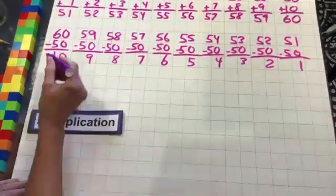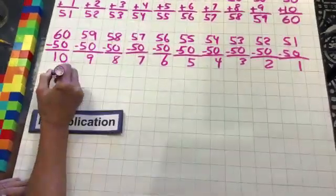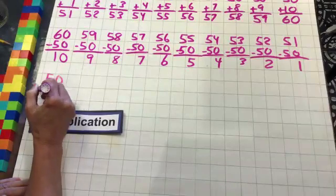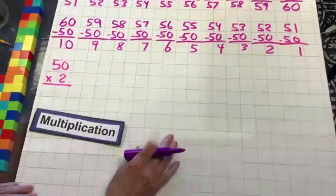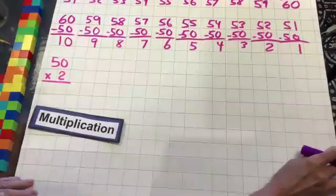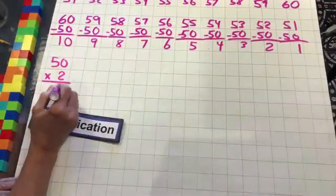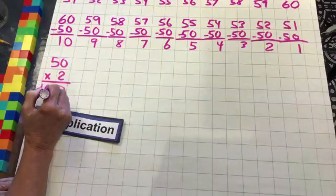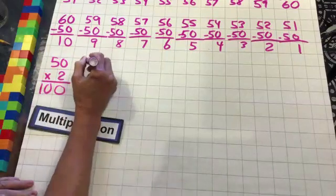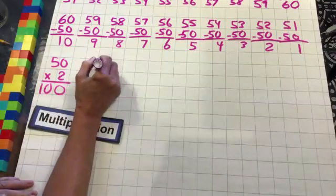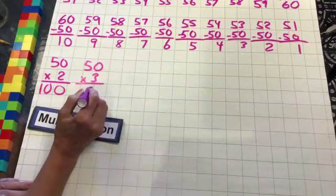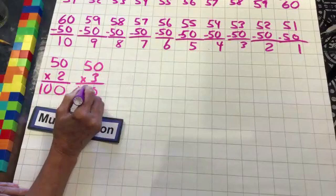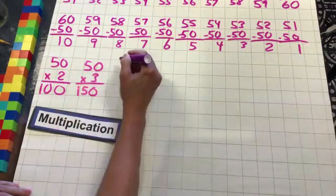Let's move on to multiplication. So we have 50 times two. Let's go through this, make sure we're all on the same page. Two times zero is zero, two times five is 10. So two fifties make a hundred. Let's do three fifties: three times zero is zero, three times five is 15. So three fifties is 150.